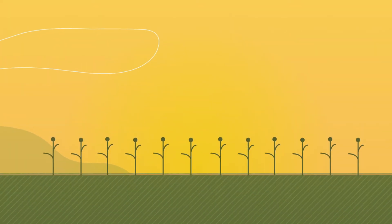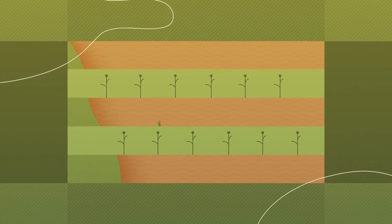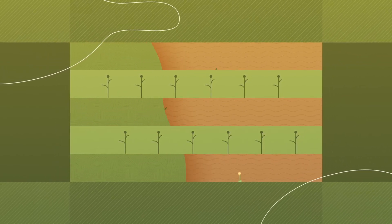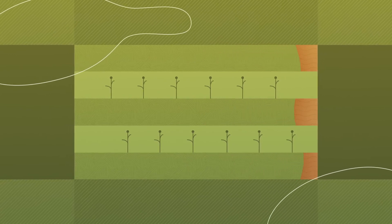Another secret to farming? Cover crops. A plant grown between crop rows to cover the soil that can help suppress weeds, improve soil fertility and fight pests all while preventing soil erosion.